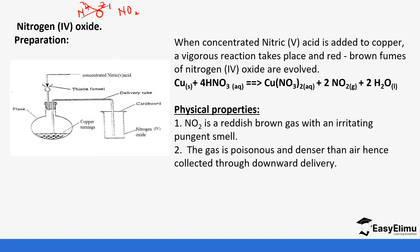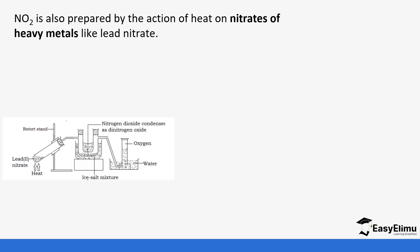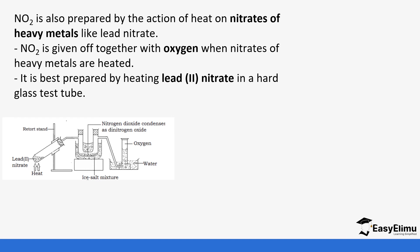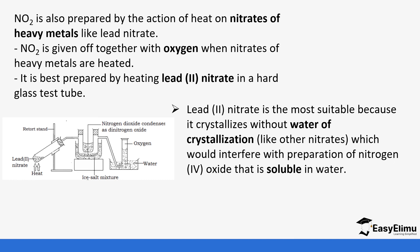Another way of producing nitrogen 4 oxide is by the action of heat on nitrates of heavy metals, like lead 2 nitrate — this was discussed in Form 2. When you heat lead 2 nitrate, nitrogen 4 oxide is produced as one of the products. Nitrogen 4 oxide is given off together with oxygen when the nitrate of a heavy metal is heated. It is prepared by heating lead 2 nitrate in a hard test tube.